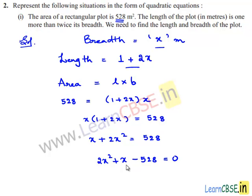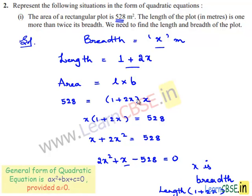Where x is the breadth and the length is 1 plus 2x, the final quadratic equation is 2x squared plus x minus 528 equals 0.